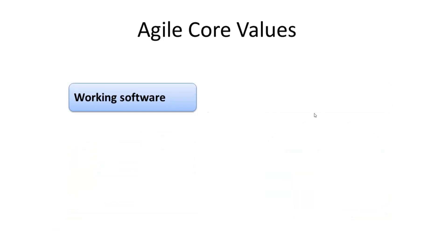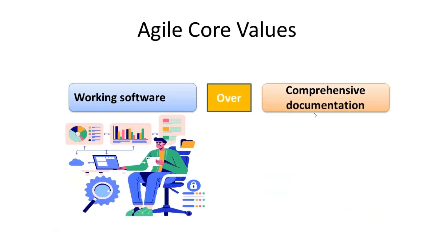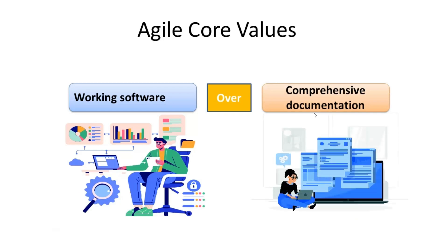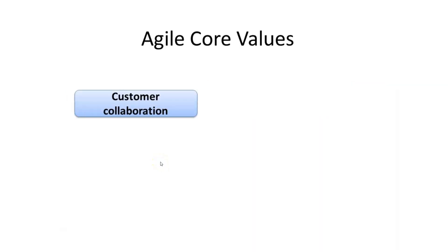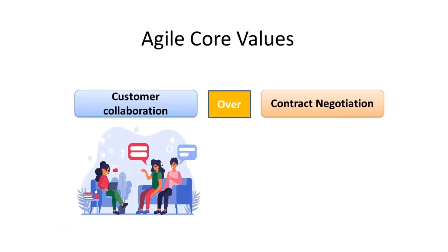Next is working software over comprehensive documentation. Agile manifesto focuses on delivering working software that meets user needs over producing extensive documentation that may not provide any direct value to the customer. Working software is continuously produced and improved based on the feedback received for the product. While documentation is still necessary, it should not hinder the delivery of the final product.